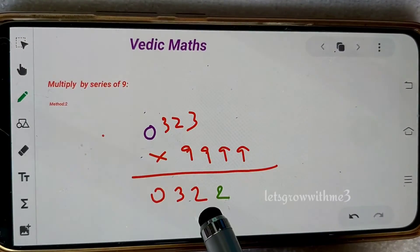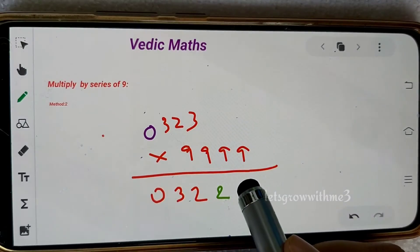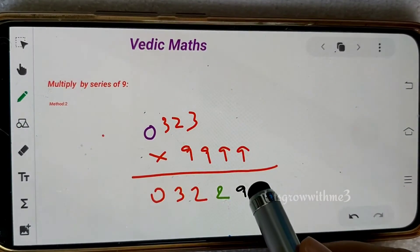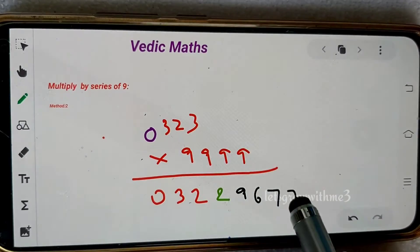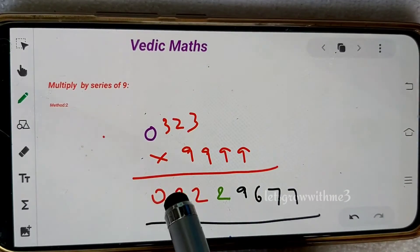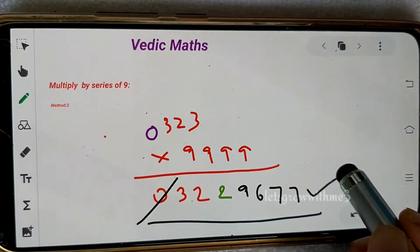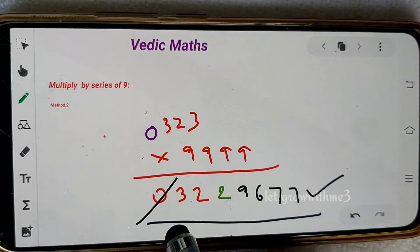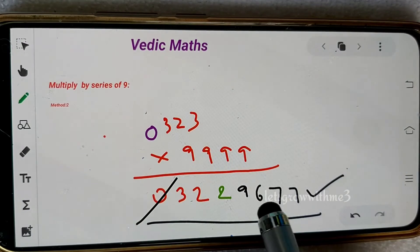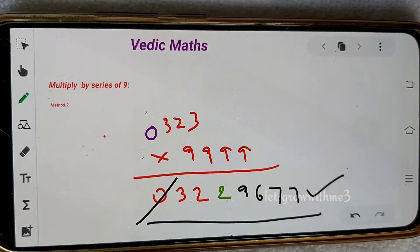0322 because 3 minus 1, and then I do the complement to whole number: 9, 6, 7, and then 7. That's our answer.